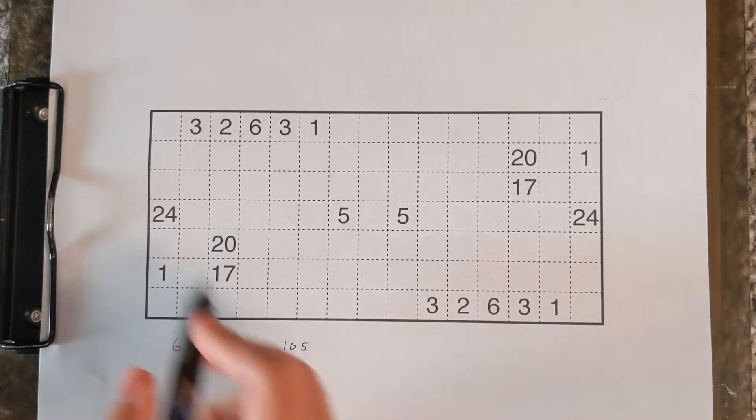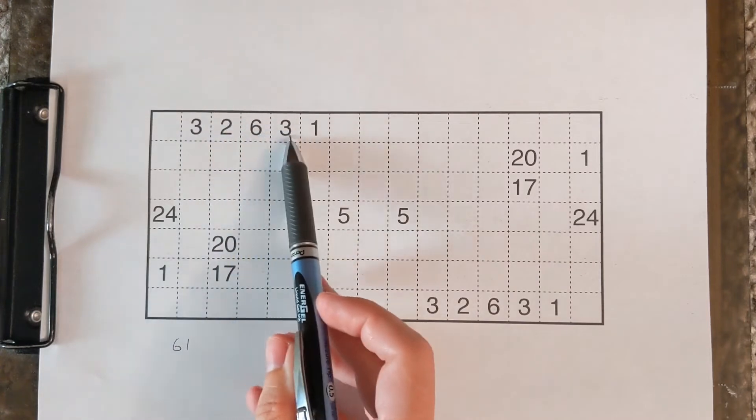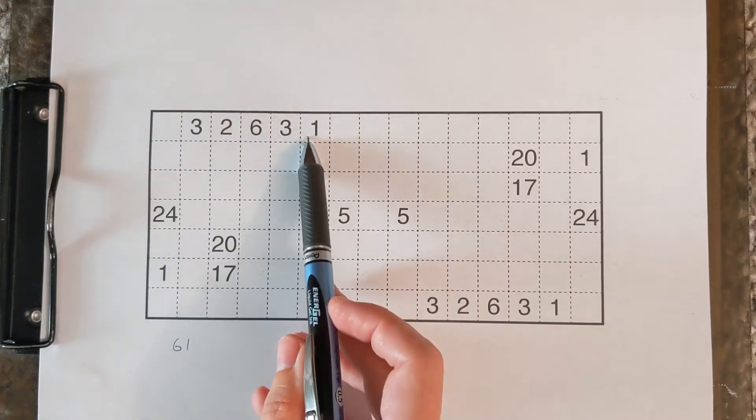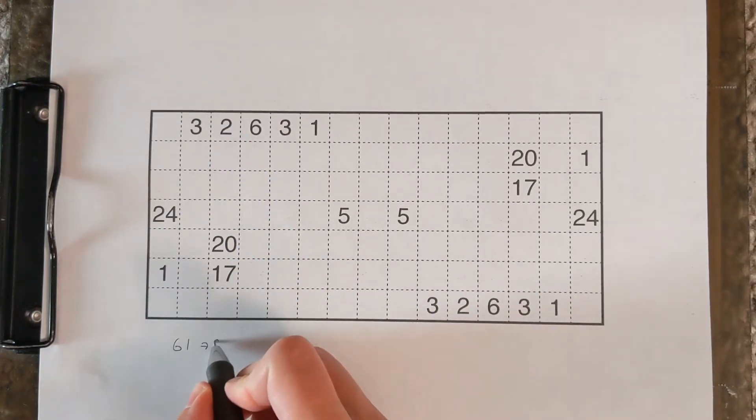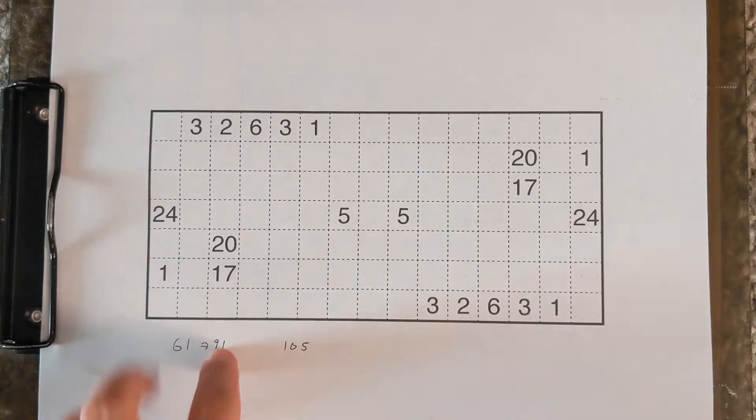There's probably not going to be enough space for these to double, but we can confirm that quickly. Here's a group of 3, 2, 6, 3, 1, 15 total cells, another 3, 2, 6, 3, 1, another 15 cells. These are never going to touch, so that's going to get us to 91 total.